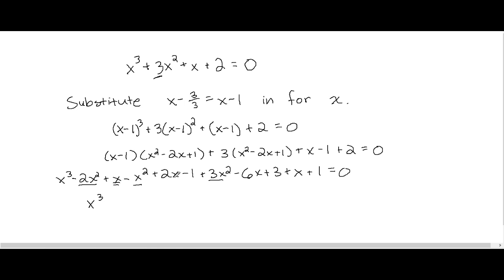Now let's find the x terms. Double underlining all of these just to account for them. So x and 2x is 3x minus 6x is minus 3x plus x will leave us with minus 2x. And then we just have a minus 1, a plus 1, and a plus 3, which will leave us with plus 3. So plus 3 equals 0.